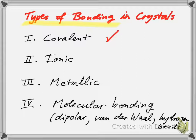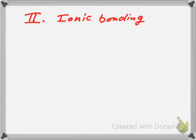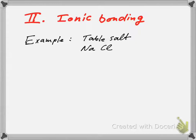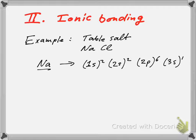First, ionic bonding. An example is sodium chloride. The sodium, if we want to write down the electronic configuration, has a single electron out in the 3s orbital, but the first two shells are completely filled and there's one lone electron hanging out in the 3s state.